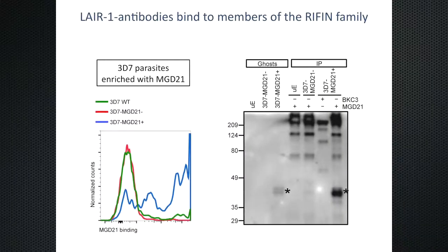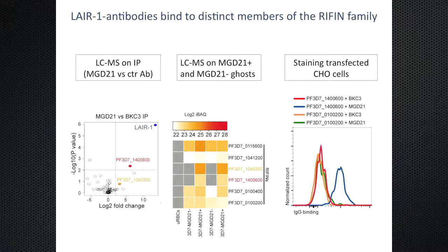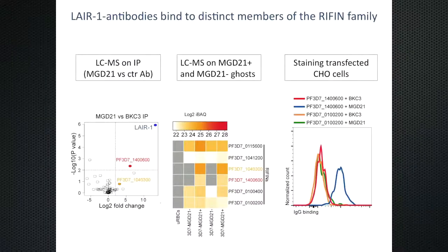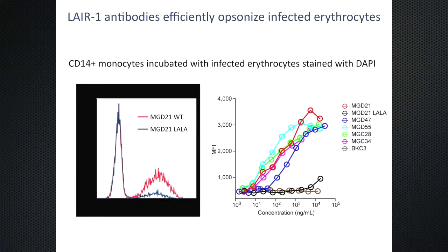Once we had this antibody, we reached for positive parasites, made Western blots on erythrocyte ghosts and immunoprecipitates, and the antibody recognizes a band of approximately 40 kilodaltons. By mass spectrometry, we identified the antigen as at least two different rifins. Here is a formal demonstration that the antibodies bind to a subset of rifins — not all of the approximately 150 rifins in the parasite genome. The antibodies can effectively opsonize infected erythrocytes, suggesting that in vivo they may be effective against malaria.